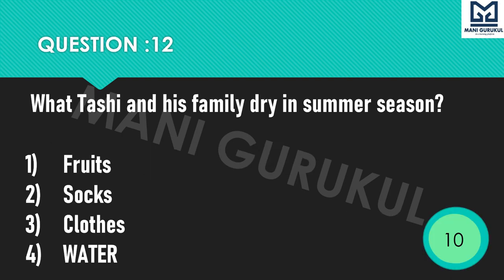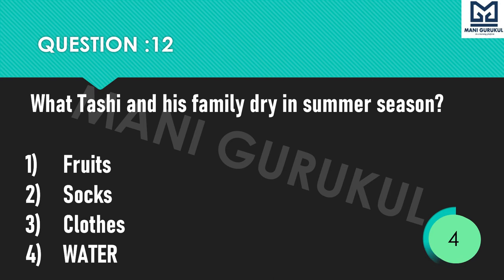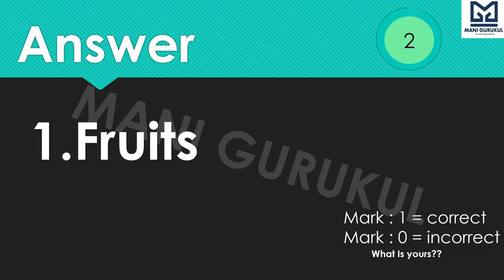Question 12: What were Tashi and his family dry with in the summer season? Options: 1st Fruit, 2nd Socks, 3rd Gloves, 4th Water. Time starts now. Answer is 1st: Fruits.